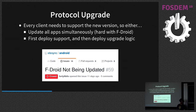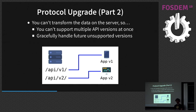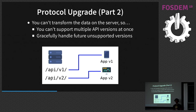Another challenge with protocol upgrades is that you cannot transform the data on the server. Normally you'd have API v1, then add API v2 and the server translates between them in the background because it can access the data. We cannot do that in end-to-end encrypted applications — the data is simply not available to the server. You also need to gracefully handle future versions: if you change the app version, you want old versions to show a message like 'please upgrade the client' rather than crashing, since we can't have a compatibility layer on the server.